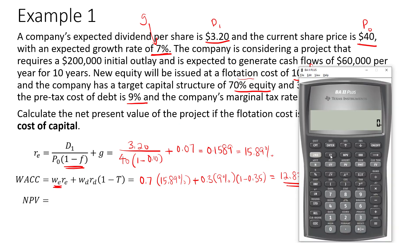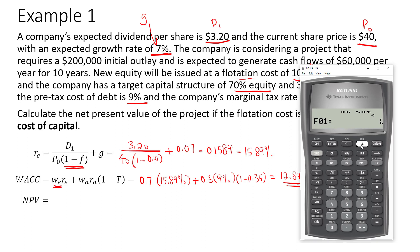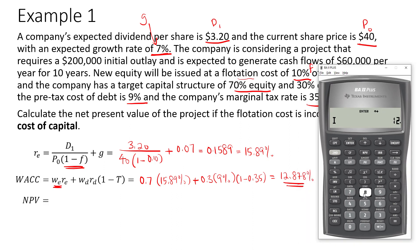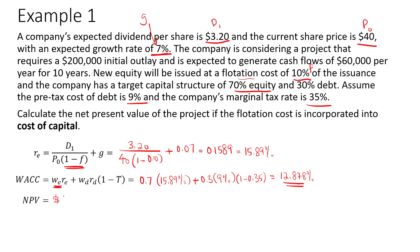Using the calculator, press the CF button to open the cash flow worksheet, then press 2nd CLR to clear it. The initial outlay is negative $200,000 — press enter. C01 is $60,000, a recurring amount, so it's an annuity. Enter $60,000 and set the frequency to 10 for 10 years. Click NPV and set I equal to the WACC of 12.878. Press enter, scroll down to NPV, and press compute. You get $127,168.27.